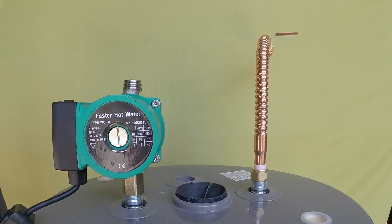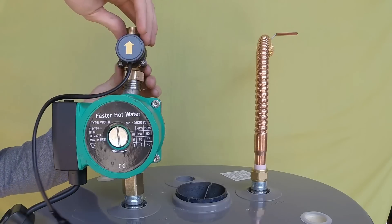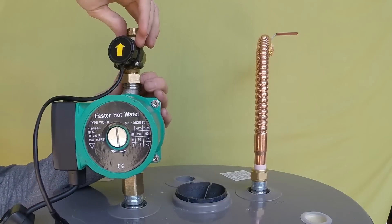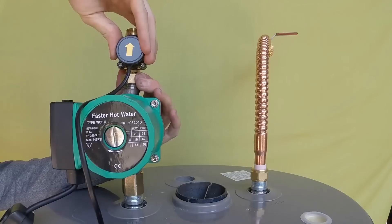Now we will install the flow monitor onto the pump. Insert the washer into the female end of the flow monitor. Then carefully screw the flow monitor onto the pump. Do not over tighten.